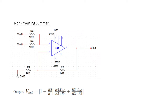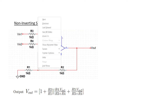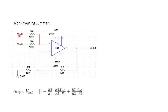Let's see how the non-inverting summer can be used. We have two inputs, Vin1 and Vin2, and an output Vout. In a non-inverting summer, it adds the two inputs and does not invert them — it adds as-is, so we expect Vout equals Vin1 plus Vin2.